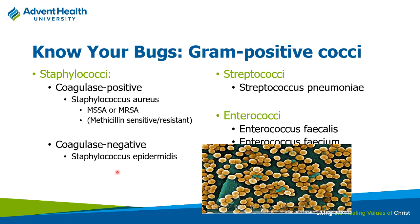Staph epi is a common skin contaminant. If you get blood cultures, it'll frequently come back with staph epi — often that's just a contaminant, not truly causing the infection, because you have to go through the skin to get that blood. That's why proper decontamination and disinfection is really important. Strep pneumo is really important — it causes otitis media, sinusitis, and pneumonias. Enterococci tend to be found in the GI tract — if you know the prefixes and suffixes, you can get a feel for where you'll find these bugs.